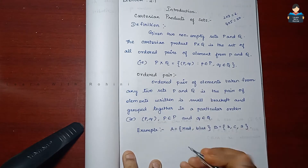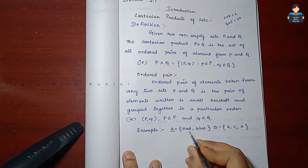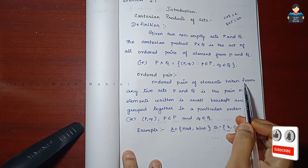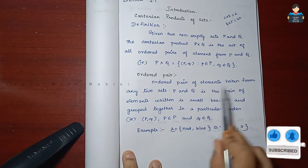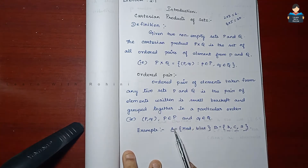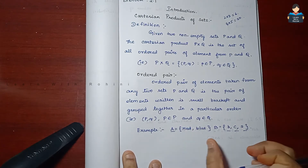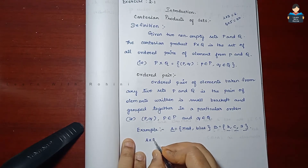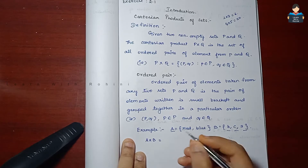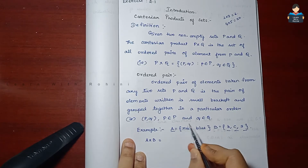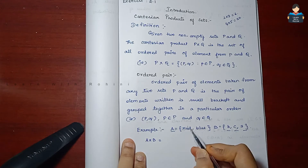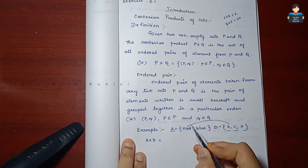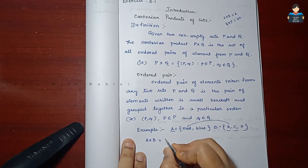A set has two elements, B set has three elements. For A cross B, we take the first element red. Red paired with ball gives (red, B). Then red paired with chair gives (red, C).